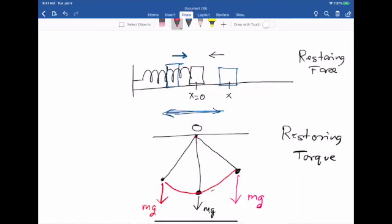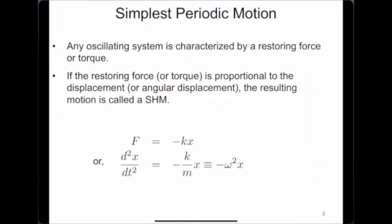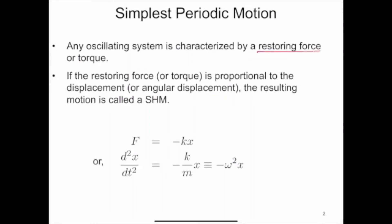Whenever you have any oscillating system, there is a restoring force or restoring torque which repeatedly tries to bring the system back to its equilibrium position. But the system doesn't stop at equilibrium because of inertia, so the oscillation continues. If this restoring force or torque is proportional to the displacement, then the resulting motion is called simple harmonic motion — the simplest possible periodic motion. The restoring force is directly proportional to displacement x, and the restoring torque is directly proportional to angular displacement theta.